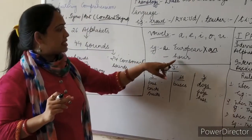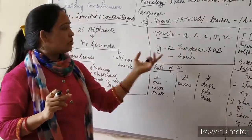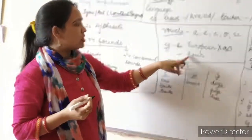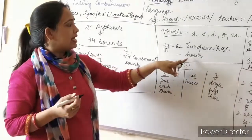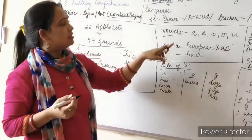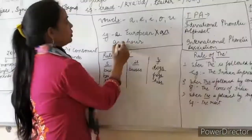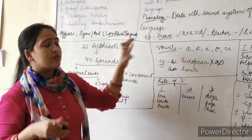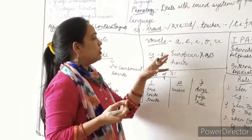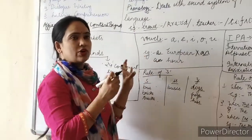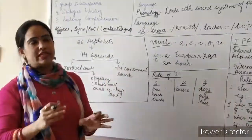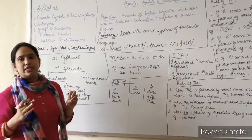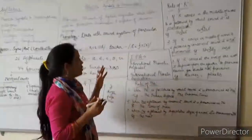Take the next example: H-O-U-R. We don't pronounce the 'H' — it is silent — so the word is pronounced 'our'. The sound coming at the start is a vowel sound, so we say 'an hour'. The rule is: always go by the sound that is coming, not by the letter. If you follow this rule, you will never make a mistake in putting 'a' or 'an'.